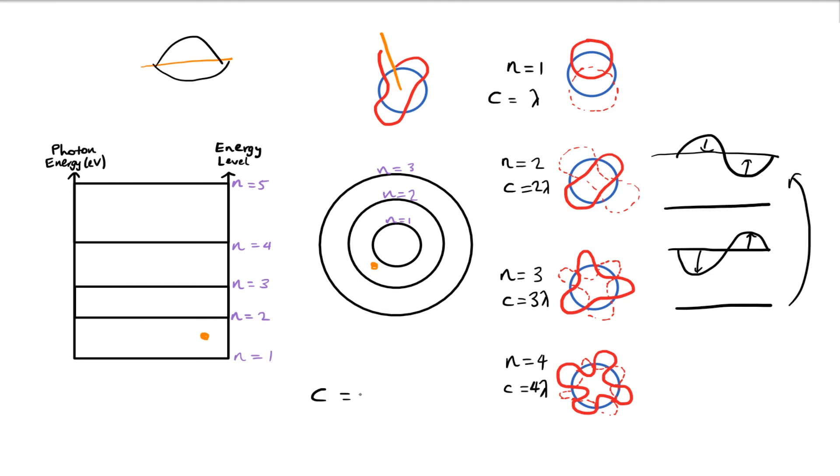So we have this general statement then, that the circumference of an electron's orbit is equal to the excited energy level multiplied by its wavelength.